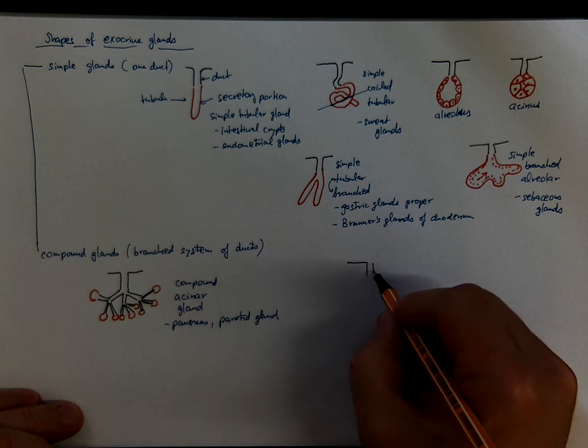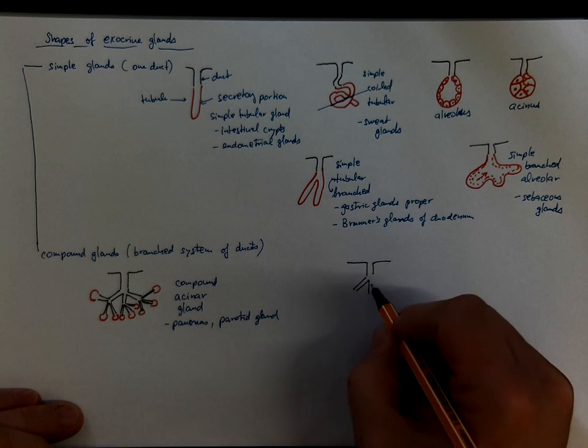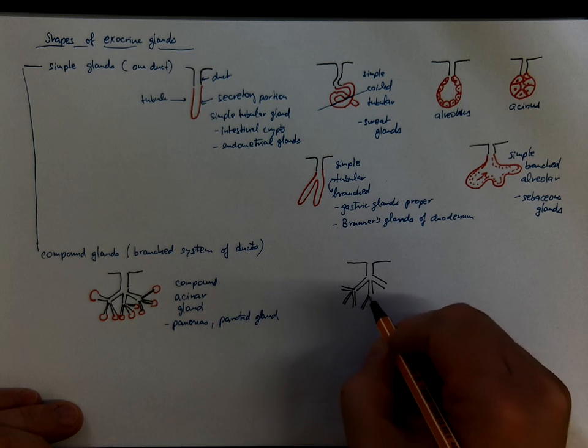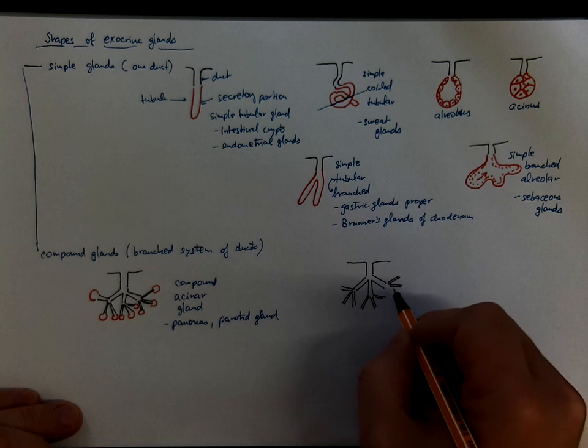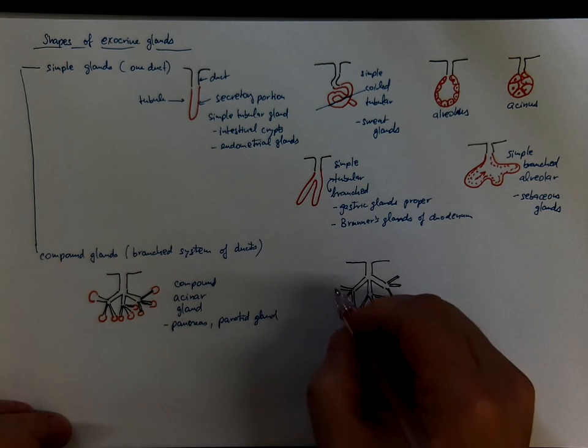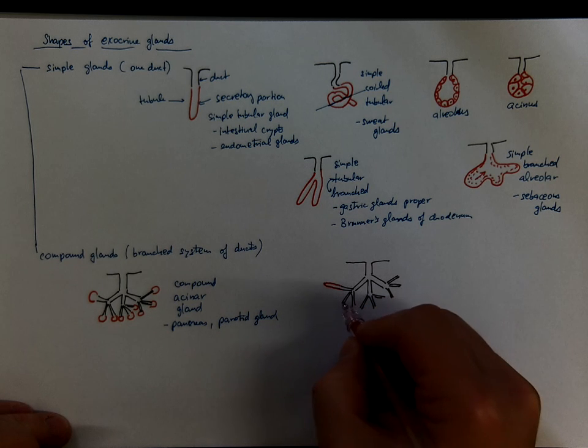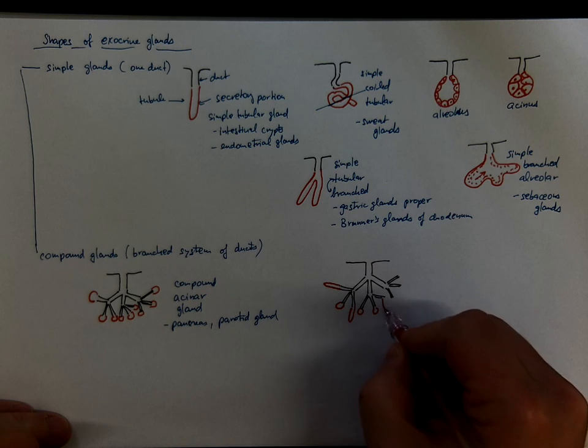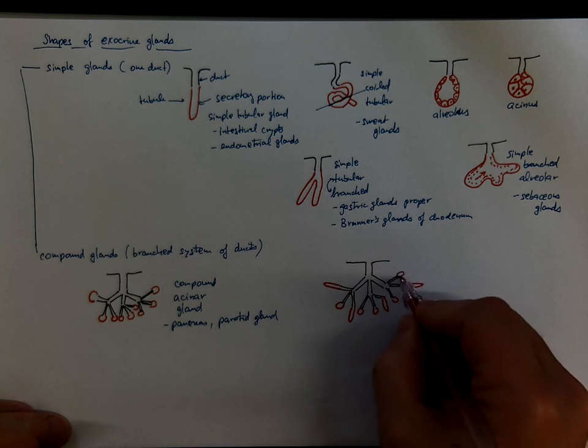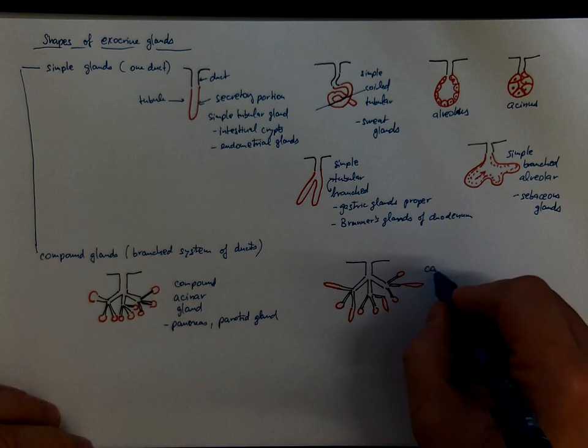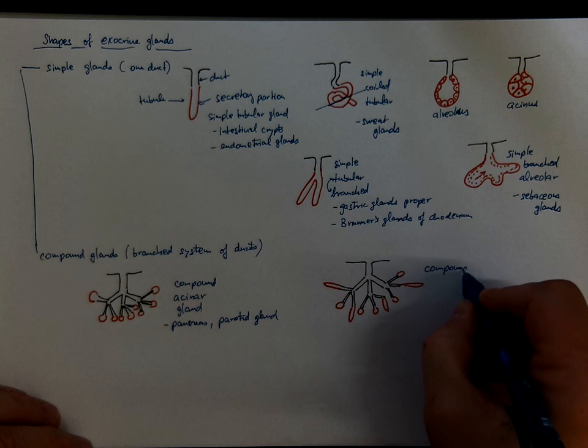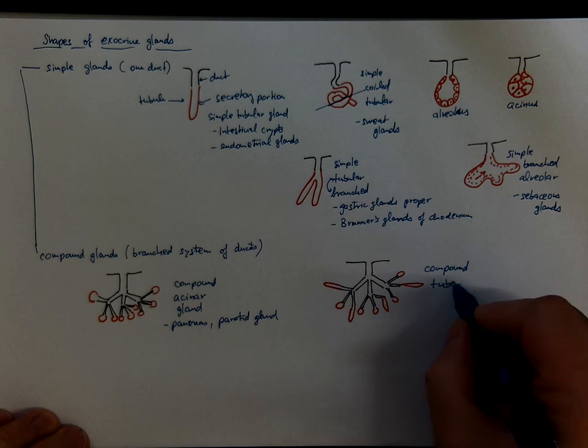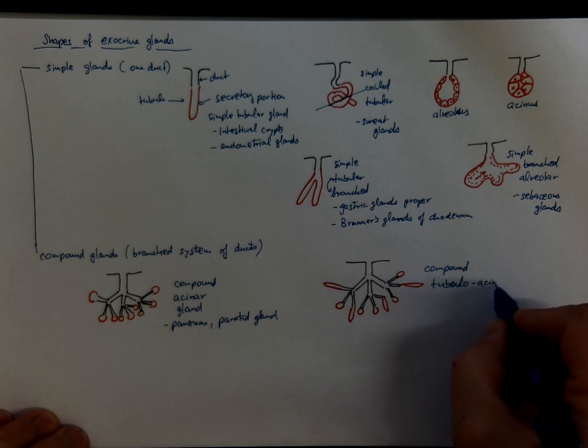If there is a tree of ducts with several generations of branching, I am not drawing all of these, but the secretory portions are tubules or acini. You will call that a compound tubulo-acinar gland.